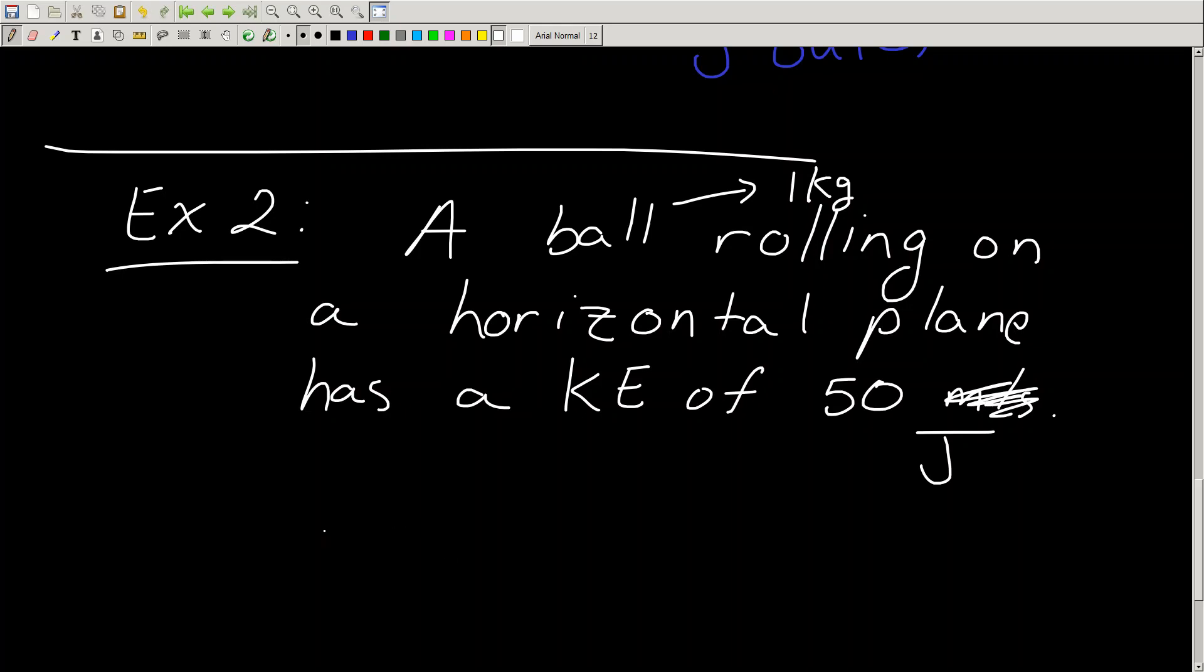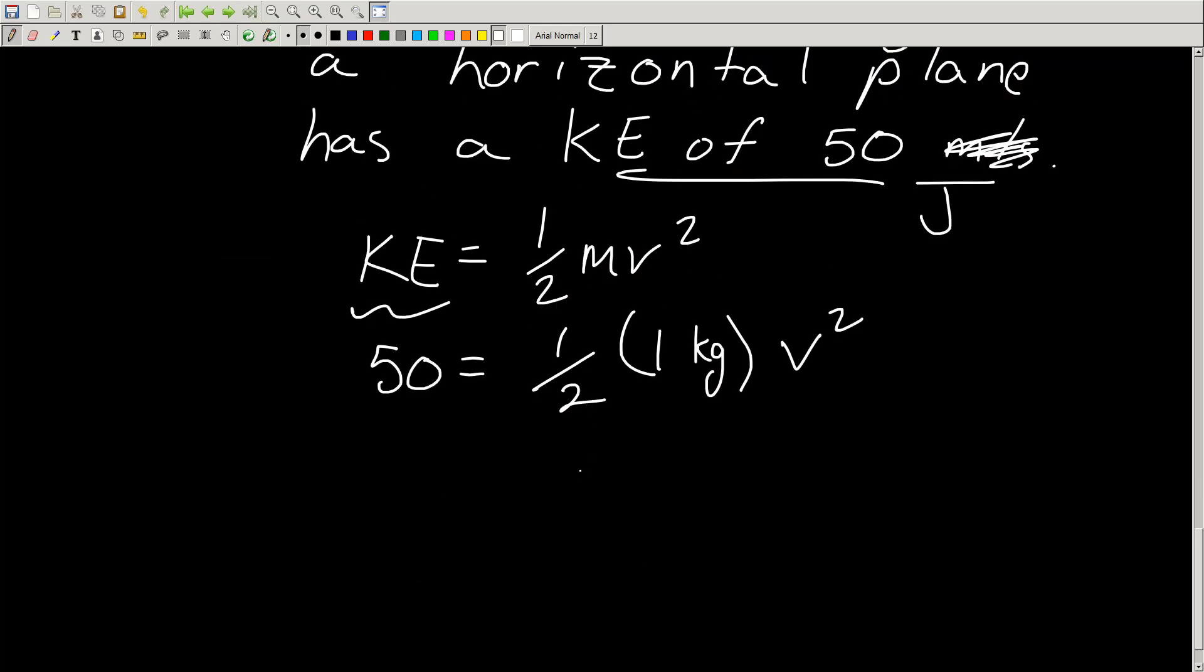Well, this is the reverse type of question, where now my KE, which is half mv squared, my KE over here is 50. They gave me the kinetic energy. And I've got a mass of 1 kilogram times v squared. All I have to do is isolate for v.